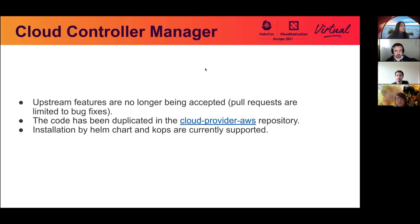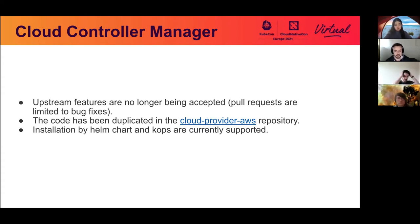In terms of the AWS cloud controller manager specifically, upstream features are no longer being accepted — pull requests are limited to bug fixes. If you are opening a feature pull request, you should open it on the cloud-provider-aws repository, where we've duplicated the v1 provider code. We currently have alpha builds for the cloud controller manager and we're working on beta right now. If you do want to check it out, there are a couple of different ways to install it on a cluster: if you use kops, you can configure it in the kops cluster config to use the external cloud provider. There's also a Helm chart provided in the repository as well as YAML files you can use to install it.